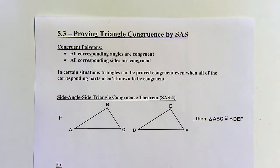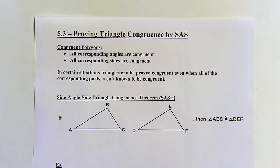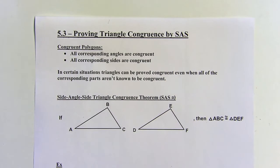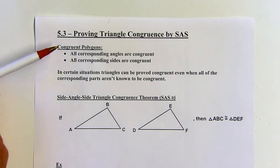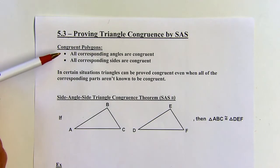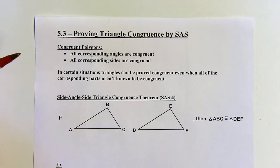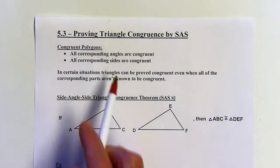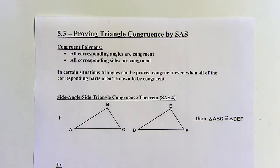We're going to look at 5.3, called Proving Triangle Congruence by SAS. So just to review, congruent polygons means that all the corresponding angles are going to be congruent, and all corresponding sides are going to be congruent. In other words, congruent polygons are going to be the same size and the same shape.